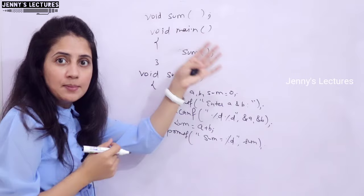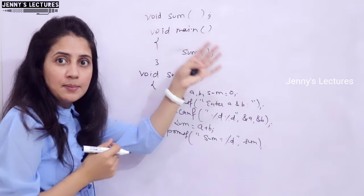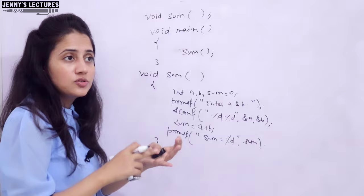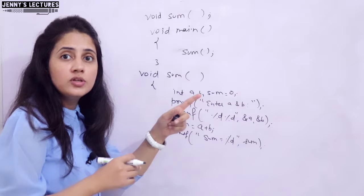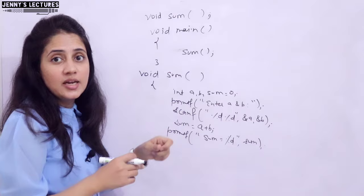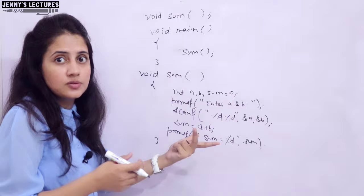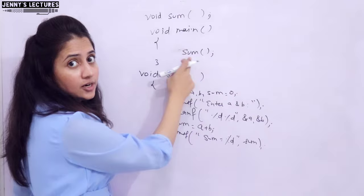Predefined functions are already defined in libraries. For example, printf and scanf are declared in stdio.h. String functions like strcat and strcmp are defined in string.h. Math functions like sqrt are defined in math.h, so you have to include that header file. Functions like clrscr and getch are declared in conio.h. But main is a user-defined function.